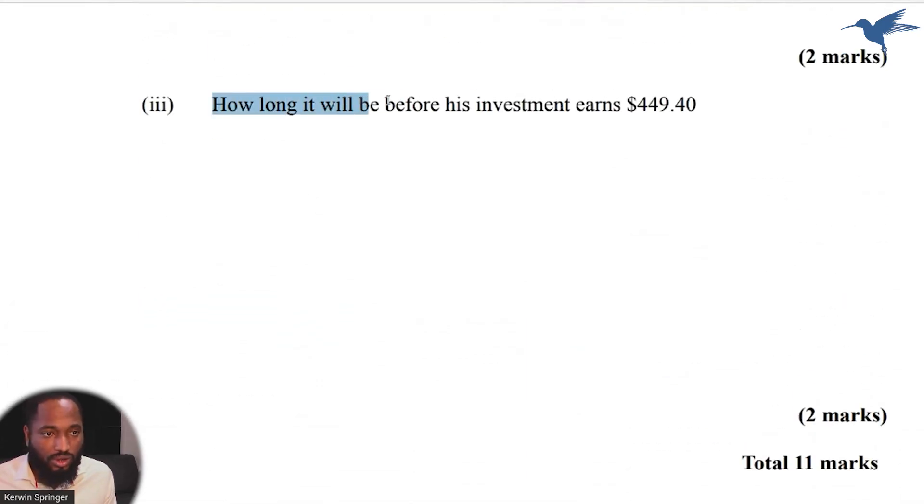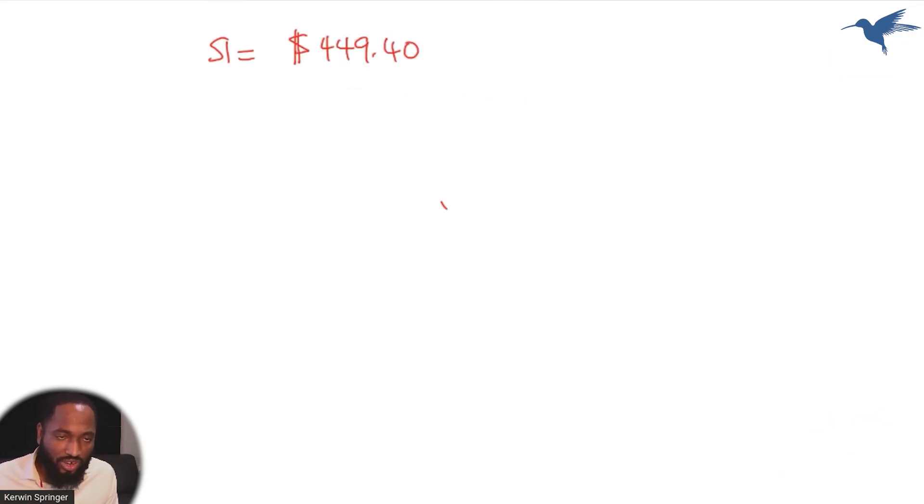Let's see if we have any more in this. Oh, how long will it be before his investment earns, meaning the simple interest on his investment becomes this? So now we are saying that the simple interest must be $449.40, and we want to know how long it takes for the simple interest to arrive at that number. So what are we trying to work out? Time.